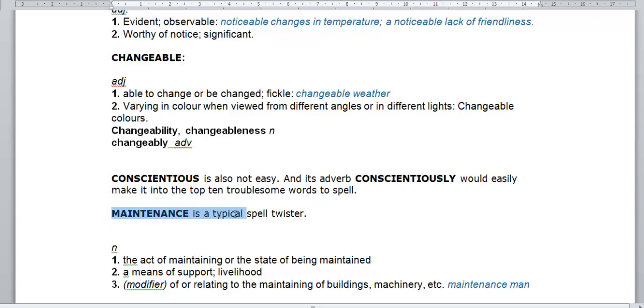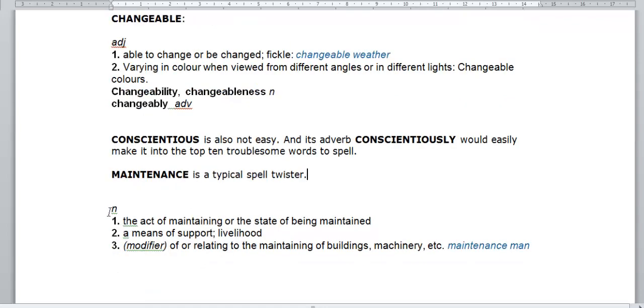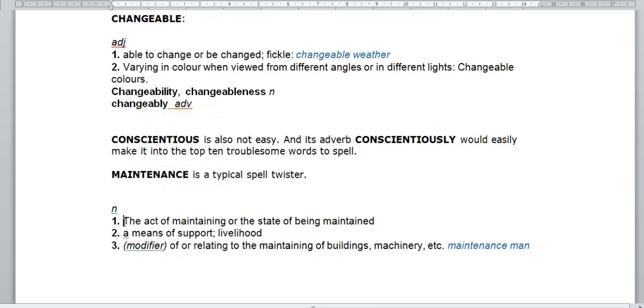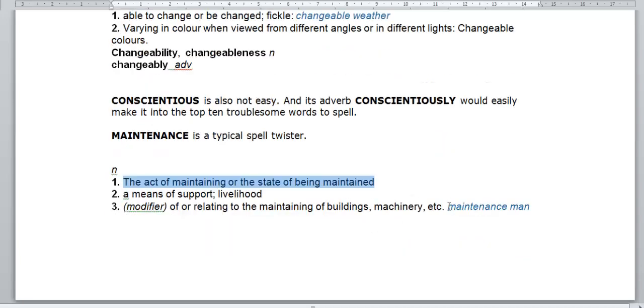Maintenance is a typical spell twister. It's complicated to spell. It's a noun. It is the act of maintaining or the state of being maintained. For example, a maintenance man, a man who keeps things maintained.